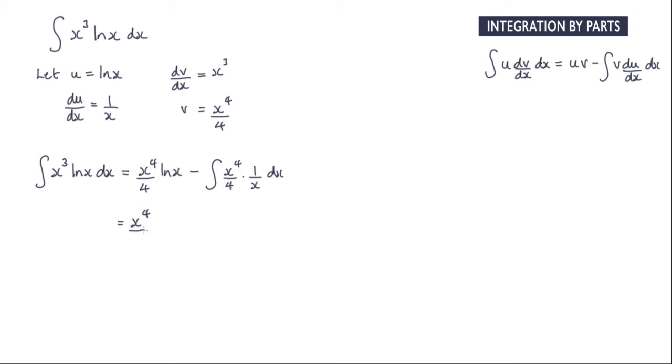So we've got x to the power of 4 over 4 log x minus. I'm going to bring this quarter outside the integral, so 1 over 4, and then we've got the integral. We can cancel this x term with one of these, so that'll leave me with x to the power of 3 with respect to x.